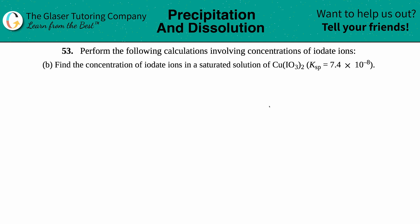Number 53: Perform the following calculations involving concentrations of iodate ions. In this case, we have to find the concentration of the iodate ions in a saturated solution of Cu(IO3)2. They told us the Ksp is 7.4 times 10 to the negative eighth.